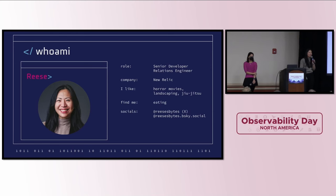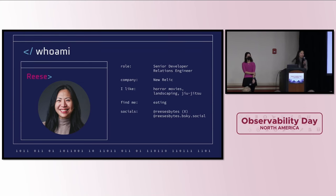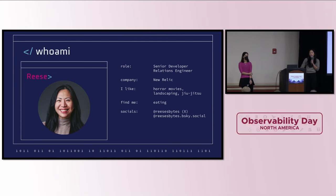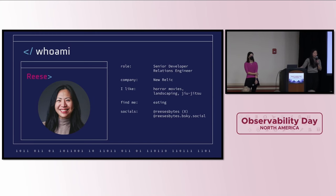Hi, everyone. I'm Reese. I am a senior developer relations engineer at New Relic. Like Adriana mentioned, we work together on the OpenTelemetry end user SIG where we're focused on connecting end users with project maintainers and helping drive that feedback loop. So if you have an interesting story, we'd love to hear from you because we do Q&As, surveys, as well as other events such as OpenTelemetry in practice. I also love horror movies, landscaping, and training jujitsu.